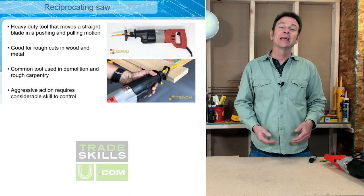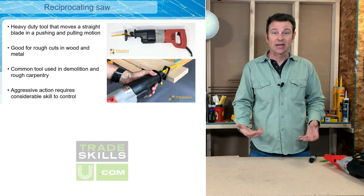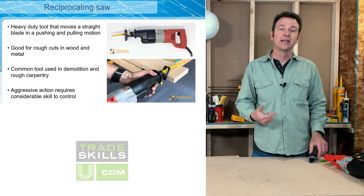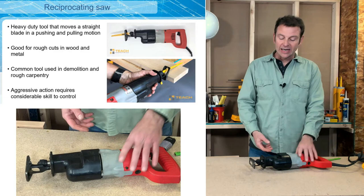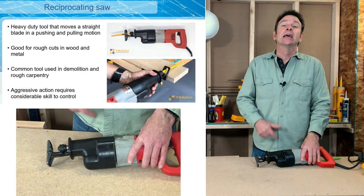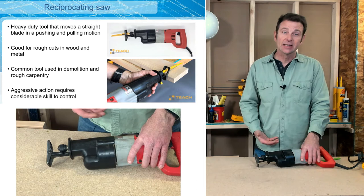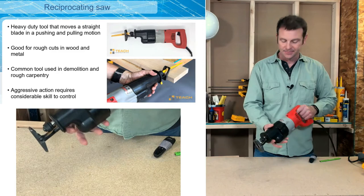There's a whole group of saws called reciprocating saws. Unlike saws that spin a circular blade, these take a straight blade and move it back and forth — that action is reciprocating. I'm going to start with the Sawzall, or reciprocating saw. It has an arm that moves back and forth in a sawing motion like a hand saw. This is not a precision tool — you'll find it used in demolition and rough cuts. It has a variable speed trigger and requires two hands to operate.